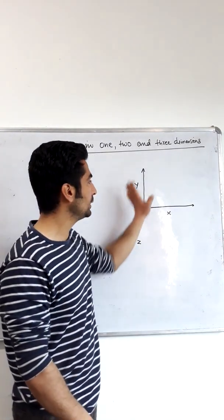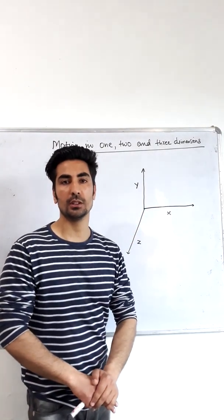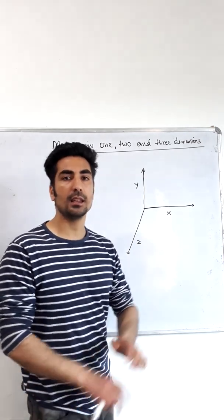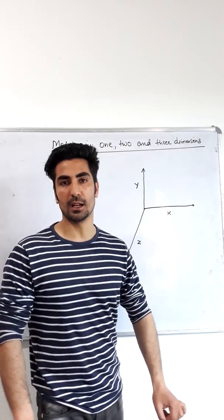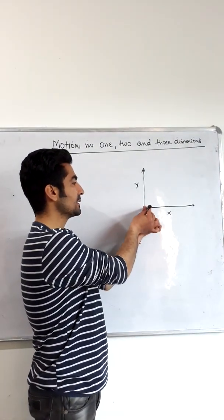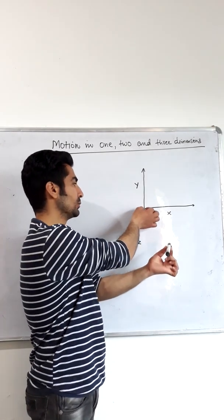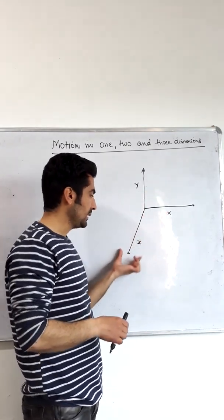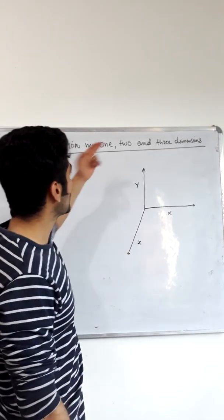All three axes are inclined to each other, meaning the angle between each pair of axes is 90 degrees. In actuality, the z-axis comes upward, but since I'm not able to draw it that way on the board, I have drawn it differently. Now we will come to our first topic.